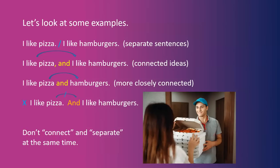A variation is "I like pizza and hamburgers" — they're more closely connected. Now look at the last one: "I like pizza. And I like hamburgers." What's wrong? You have a separation with the period and a connection with the conjunction "and." Don't connect and separate at the same time. That's wrong.